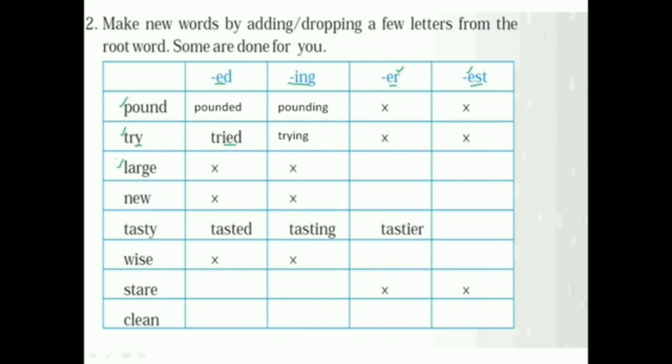So next one, large. So there is no ed and ing word. So larger, largest, larger and largest. Comparative and superlative degrees. So new. Next one is new. Same like that, you have to add er and est. Newer and newest.